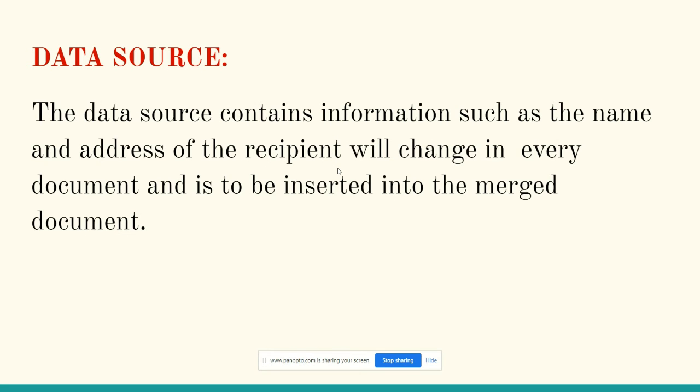The second component is the data source. The data source contains information such as the name and address of the recipient, which will change in every document. The data source is a collection of information like names, addresses, email IDs, phone numbers, and so on. The personal information of each recipient will change in every document.